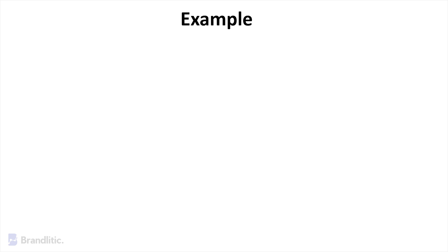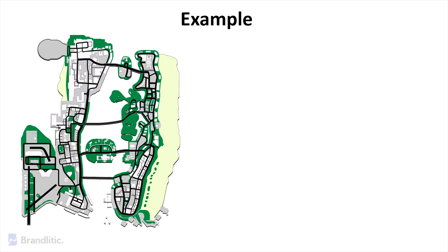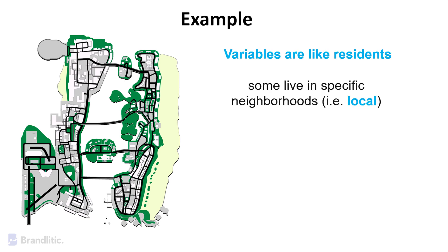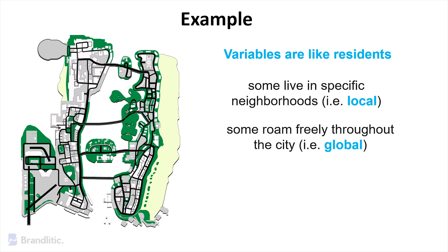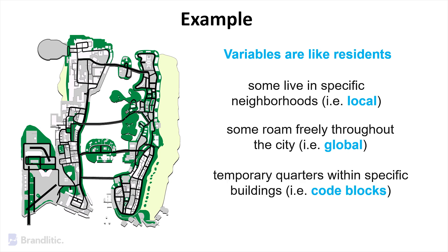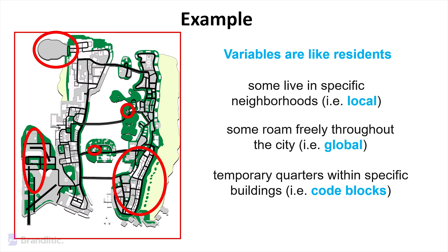Imagine your JavaScript code as a bustling city. Variables are like residents — some live in specific neighborhoods, i.e. local, some roam freely throughout the city, i.e. global, and others have temporary quarters within specified buildings, i.e. code blocks. Scopes define where these variable residents can be found and accessed.